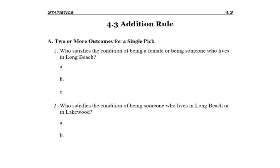When it comes to finding probability, there's a method referred to as the addition rule, which applies to certain types of probability. Specifically, it's when we're looking for two or more outcomes, but only for a single pick — the probability of picking one thing that meets certain criteria.